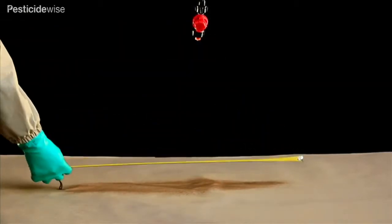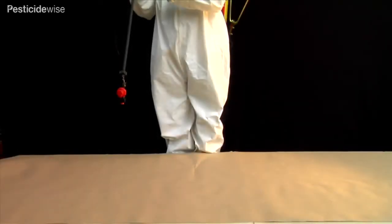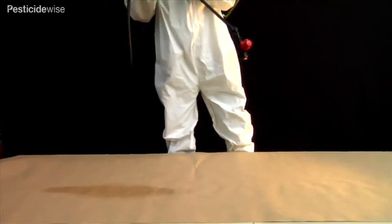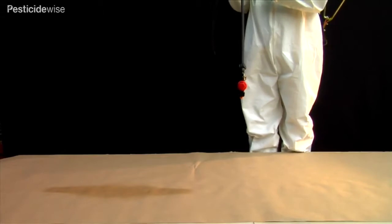When one swath is sprayed alongside another, with the nozzle at 0.5 metre intervals and at 0.5 metres height, the edge deposits overlap each other so that this overlapped area is treated at the same dose rate as the centre of the swath.